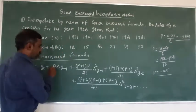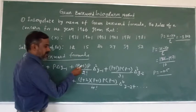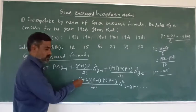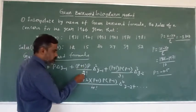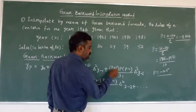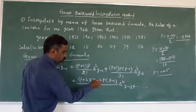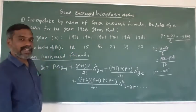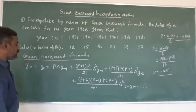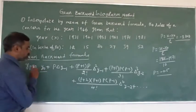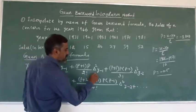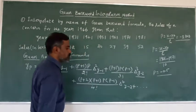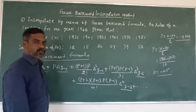Starting from p, we add p+1, then p−1, then p+2 — so there are two terms divided by 2 factorial, three p-values divided by 3 factorial, and four p-values divided by 4 factorial. The formula requires y-naught, Δy₋₁, Δ²y₋₁, Δ³y₋₂, and Δ⁴y₋₂.